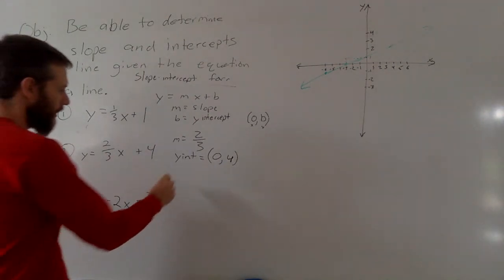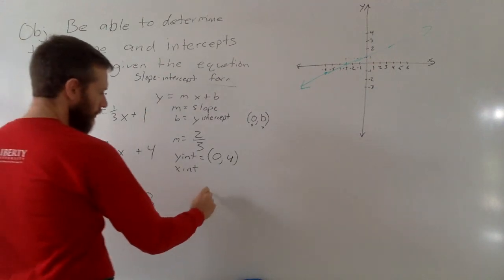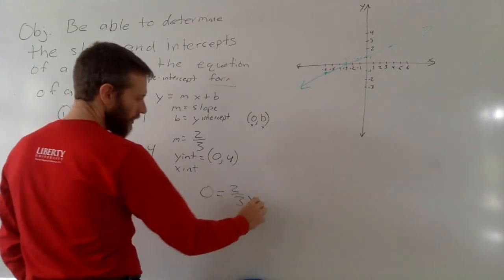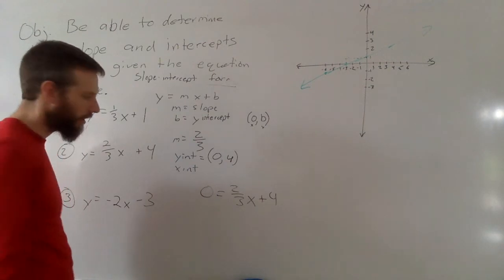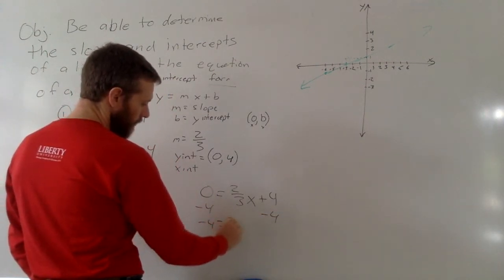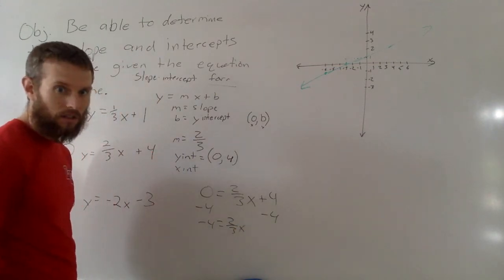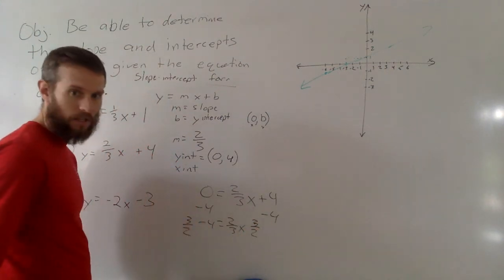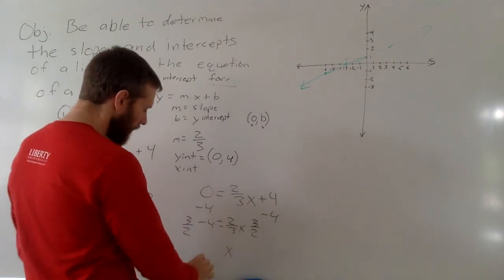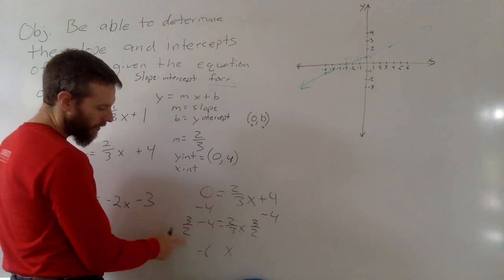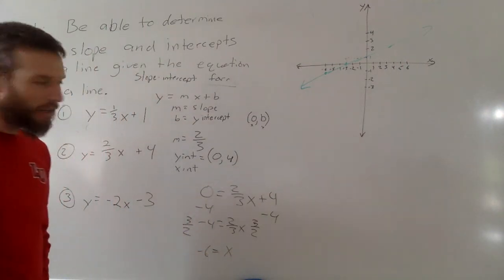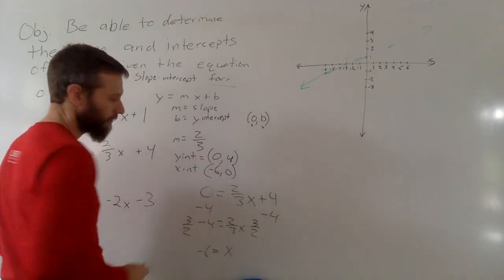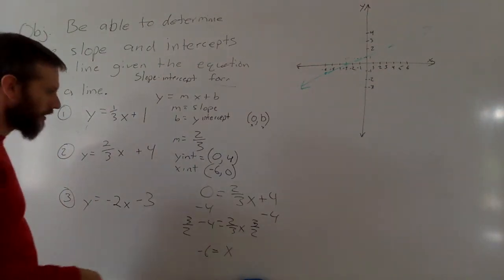And I can find my x-intercept by plugging in 0 for y. So 0 equals 2/3 x plus 4. I'm going to go ahead and solve this. Subtract 4 from both sides. Negative 4 equals 2/3 x. I'm going to do the inverse operation, or multiply by the reciprocal. So I'm going to multiply by 3/2, both sides. Now that cancels, and I get x by itself, and I believe this becomes, I could do it negative 12 over 2, or negative 6. So our x-intercept is negative 6 comma 0. Again, if I was to graph this, we could find that that way as well.